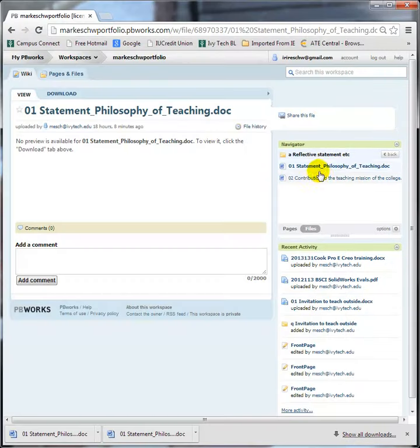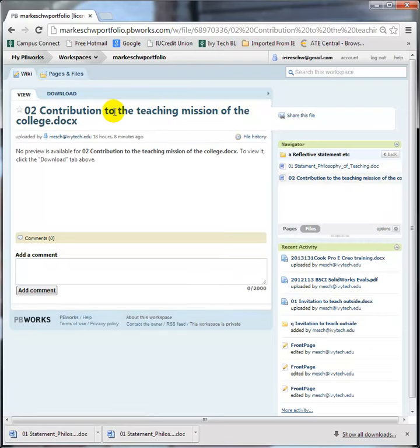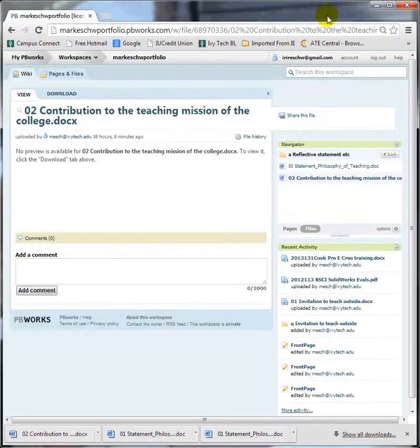Then you click on the download button and it pulls it up and then you can review it. All right, and so that would be like the first one. Then you click on the next file. It's here. You click download and you click on the bottom where it's downloaded and you review it and close it.